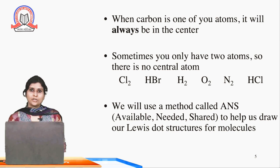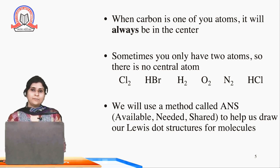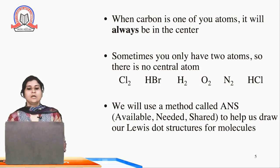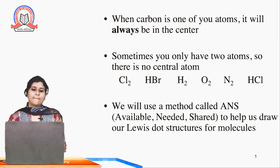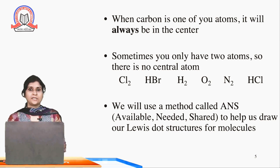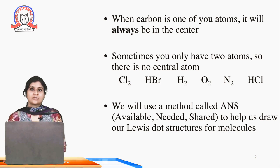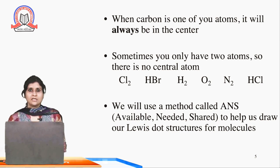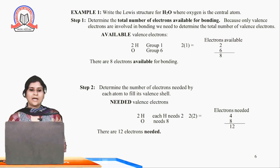We will use a method called ANS — Available, Needed, Shared — to help us draw our Lewis dot structure for molecules. Available means how many electrons are available to share. Needed means how many electrons they need to complete their valencies. Then, on the basis of availability of electrons and the requirement of electrons, we can determine the sharing of electrons that takes place in the atom.